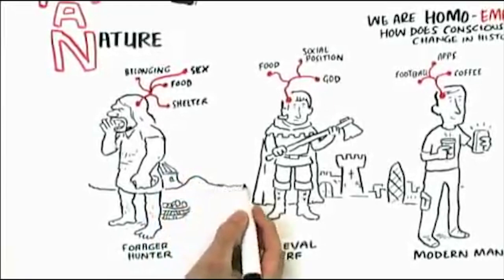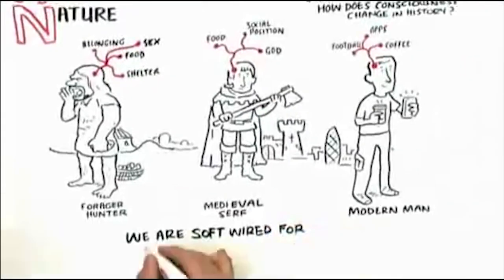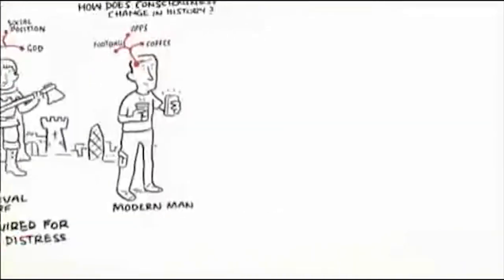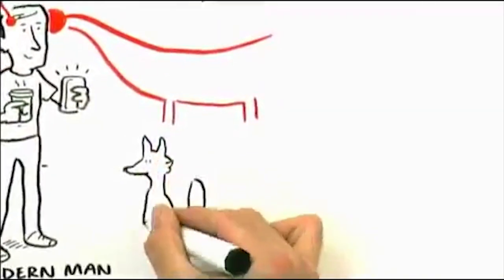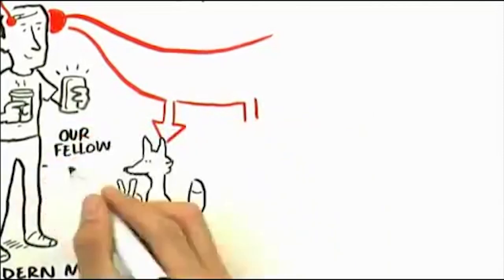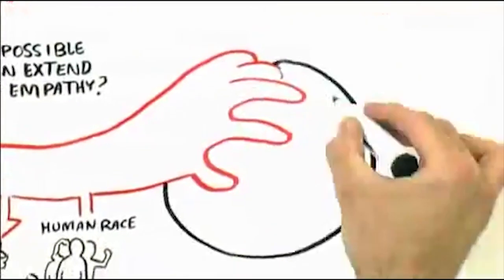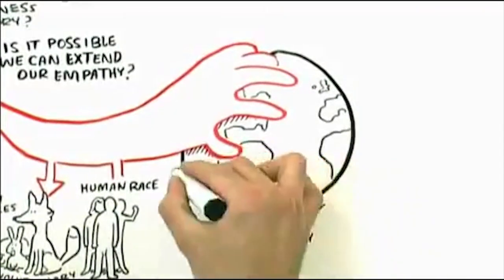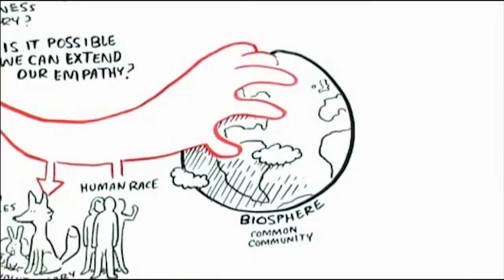Because I wanted to imagine the following proposition. Is it possible that we human beings who are soft-wired for empathic distress, is it possible we could actually extend our empathy to the entire human race as an extended family and to our fellow creatures as part of our evolutionary family? And to the biosphere as our common community. If it's possible to imagine that, then we may be able to save our species and save our planet.